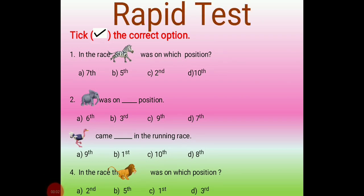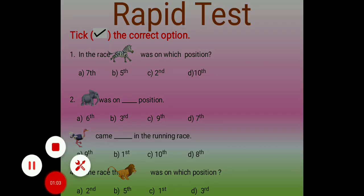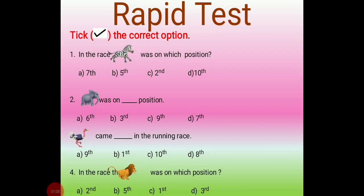Now here is a rapid test for you. As you have seen the running race of animals and given ordinal numbers according to their positions, now you have to tick the correct option. First: in the race, zebra was on which position? A) seventh, B) fifth, C) second, or D) tenth. Second: elephant was on which position? A) sixth, B) third, C) ninth, or D) seventh. Next: ostrich came dash in the running race — A) ninth, B) first, C) tenth, or D) eighth. And the last one: in the race, the lion was on which position? A) second, B) fifth, C) first, or D) third. You can say the answer orally and your parents can check, or copy down these questions and write the correct option. You can replay the video and see the race again to answer.